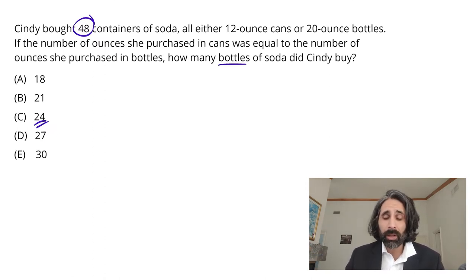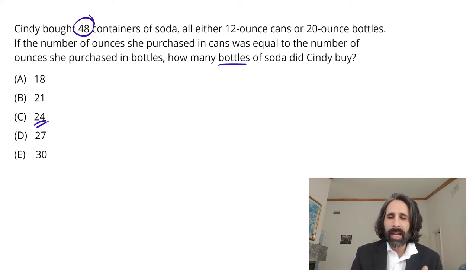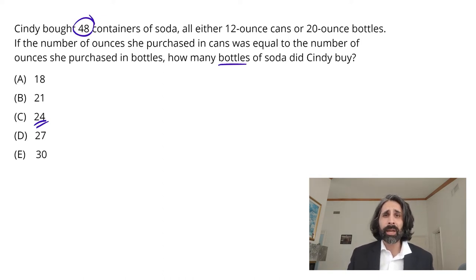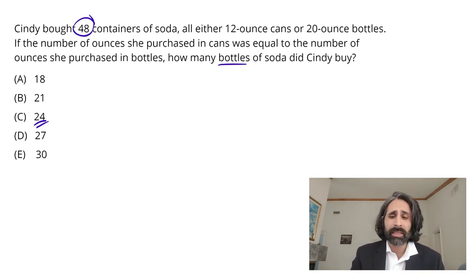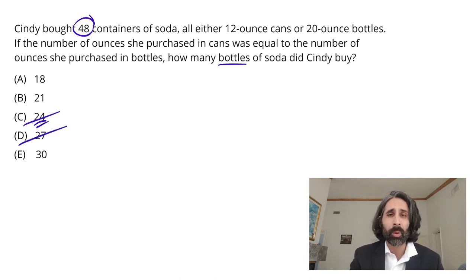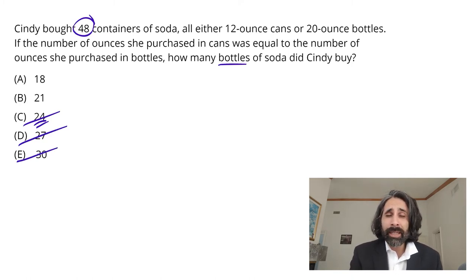That still leaves the question: does that mean we need a lower number of bottles than 24 or a higher number? Here a little estimation goes a long way. If we have 24 cans with a small number of ounces each and 24 bottles with a big number of ounces each, we're going to end up with too many ounces on the bottle side. The only way to fix that is to reduce the number of bottles. We can't have 24 bottles and 24 cans — that's too many bottled ounces. And we certainly can't have 27 or 30 bottles, because that just makes things worse.